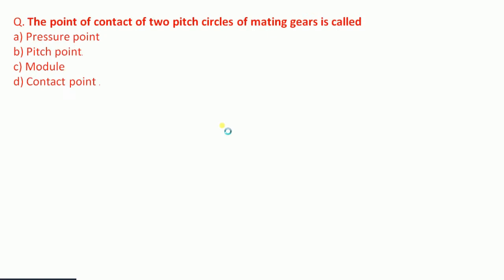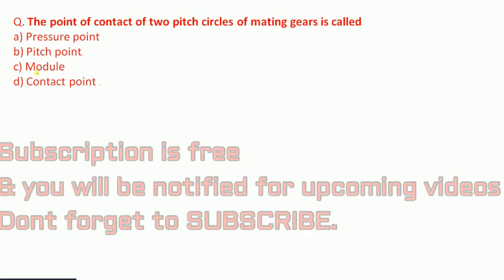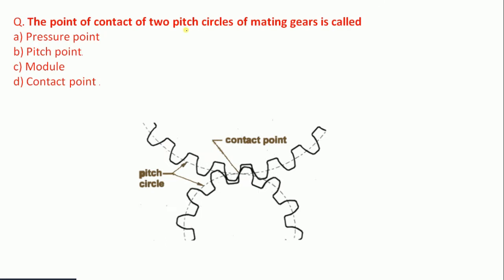Question 4: The point of contact of two pitch circles of meshing gears is called — pressure point, pitch point, module, or contact point? We can see two pitch circles of gear 1 and gear 2. The point where they touch is called the pitch point. Therefore option B — pitch point — is the correct answer.